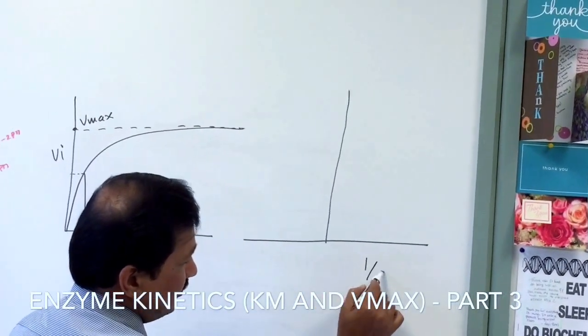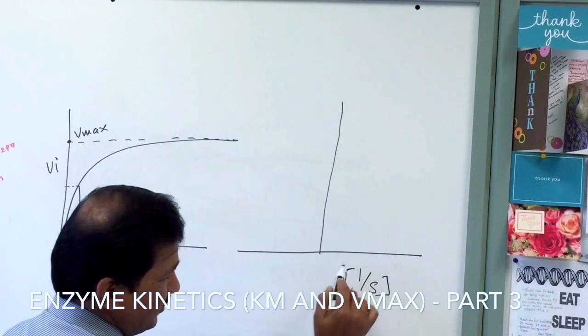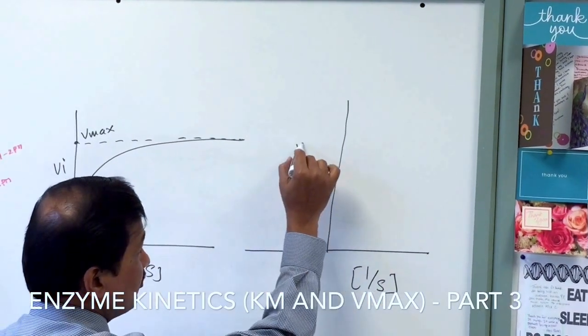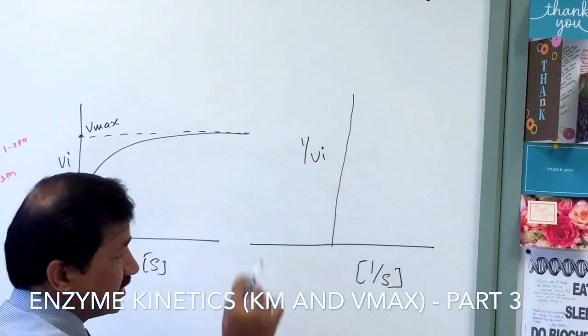The x-axis is 1 over substrate concentration, it is all reciprocals. The y-axis is 1 over Vi, the initial velocity of the reaction.